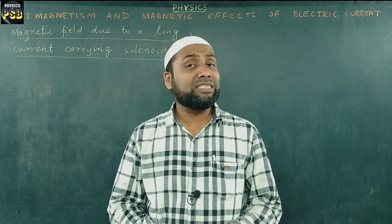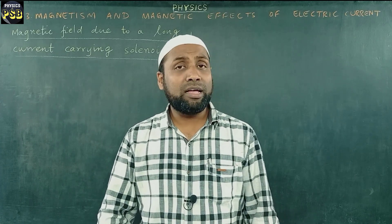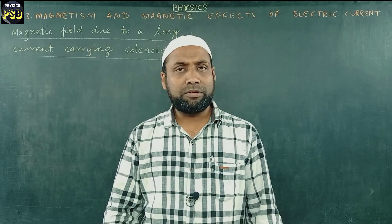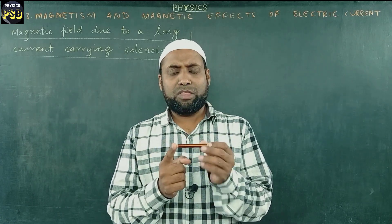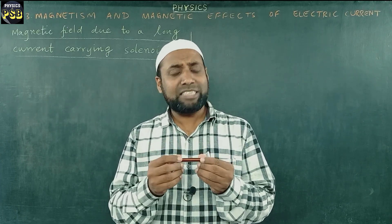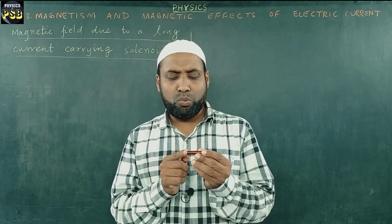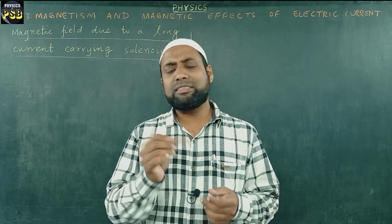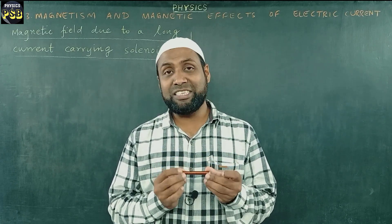Before going ahead, let me tell you what a solenoid is. A solenoid is nothing but a long, closely wound helical coil. The coil that I hold in my hand is a solenoid. If you look at it, the windings are done very close to each other. It has a helical winding done very close to each other, and the length is very large compared to the diameter. This kind of long coil is usually referred to as a solenoid.